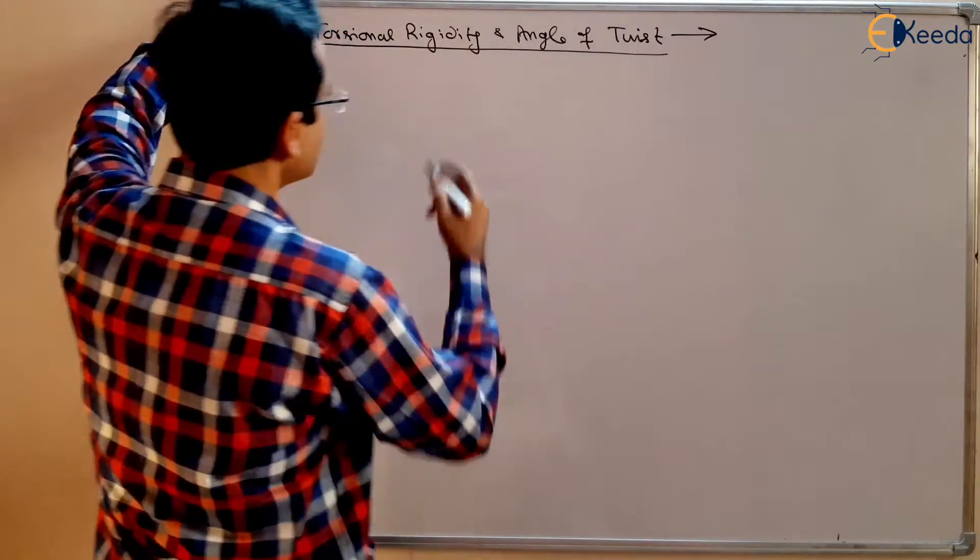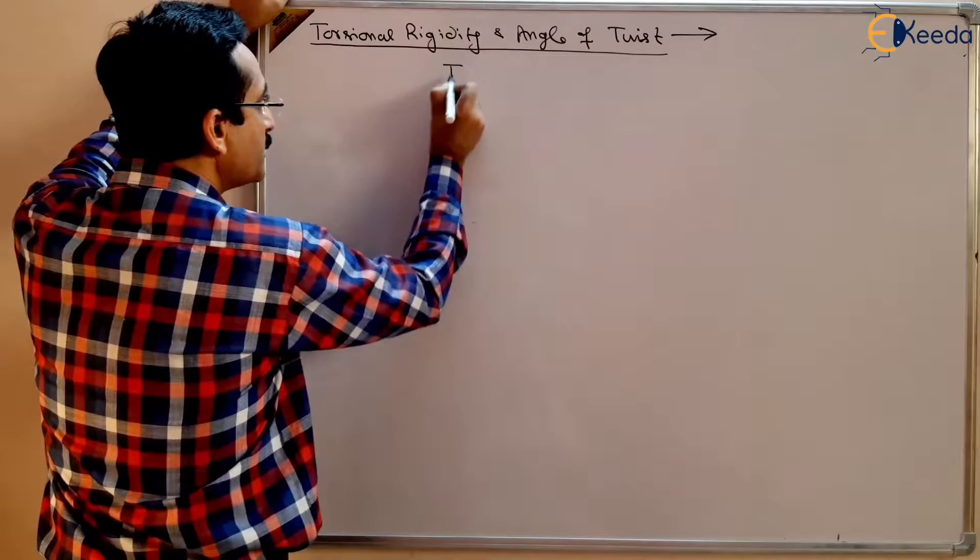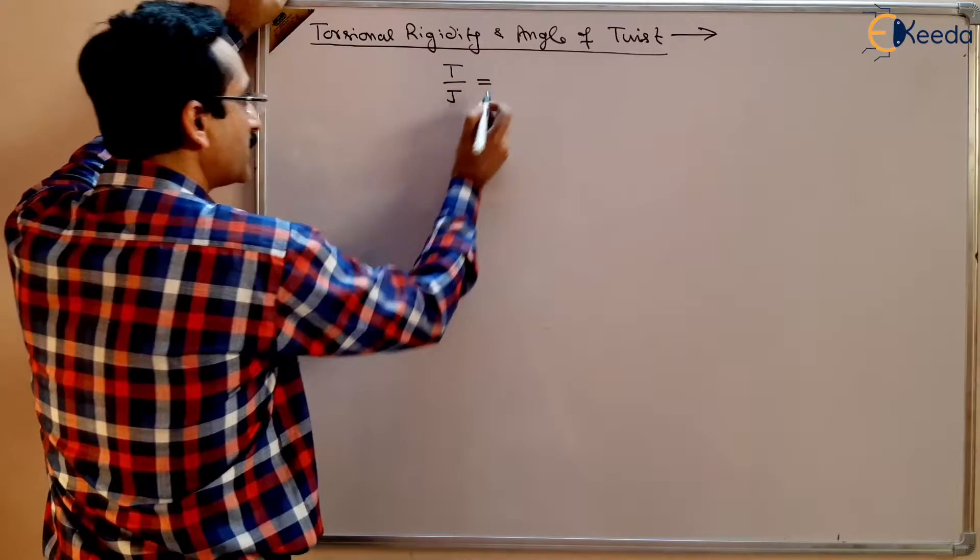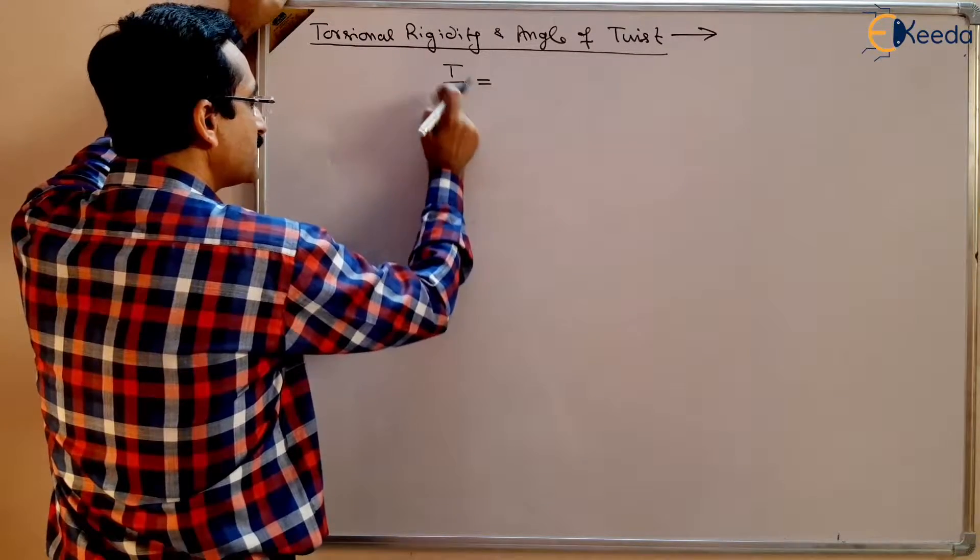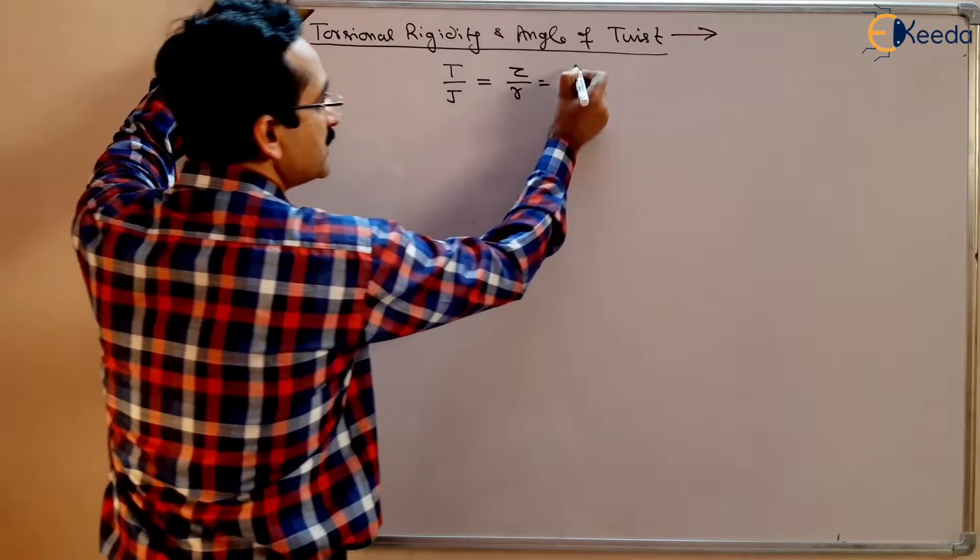What is the formula for torsional equation? What is torsional equation? Remind that again. This should be in your fingertips because this is very important formula: T by J equals tau by R equals G theta upon L.